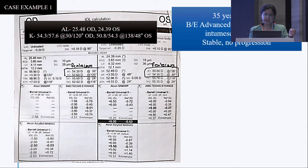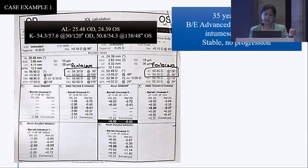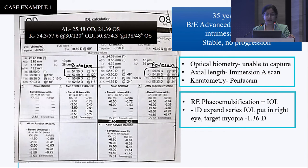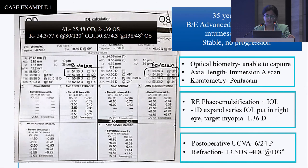Case example: a 35-year-old female with bilateral advanced keratoconus and intumescent cataract, stable with no progression. Optical biometry could not be captured due to the white cataract, so axial length was done with immersion A-scan and Pentacam keratometry readings were taken. Right eye phacoemulsification was performed with a minus 1 D expanded-range IOL. Target myopia was minus 1.36 D. Postoperatively, uncorrected visual acuity was 6/24; refraction was +3.5 D sphere with minus 4 D cylinder at 103 degrees — demonstrating a significant postoperative hyperopic surprise.